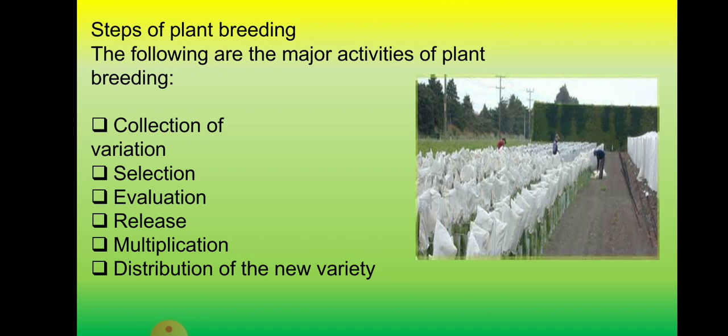Traditional breeding is essentially a trial-and-error method. Don't blame seed companies for the high price of their seeds — those few seeds in a packet underwent extensive failed trials and trial-and-error processes until the perfect trait was achieved before commercialization. If the evaluation shows the trait is not right, the process repeats again.